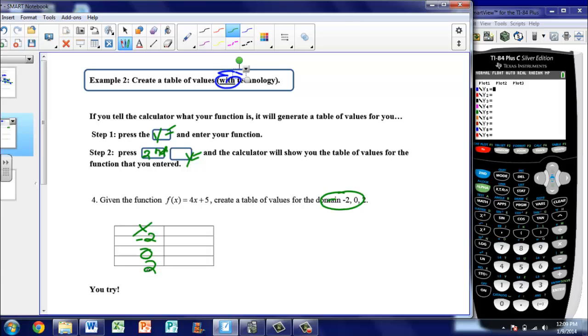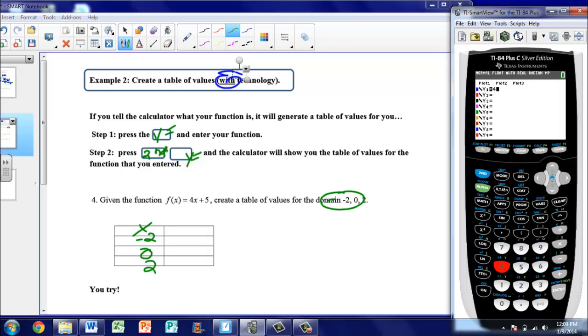Now up above, we learned how to do this by hand, so we could calculate the numbers if we wanted to. But it's a valuable tool to see how the calculator can do this for you. So it says, press y equals and enter your function. So I already pressed y equals. Now I'm going to enter the function, and my function is 4x + 5. So I've entered my function.